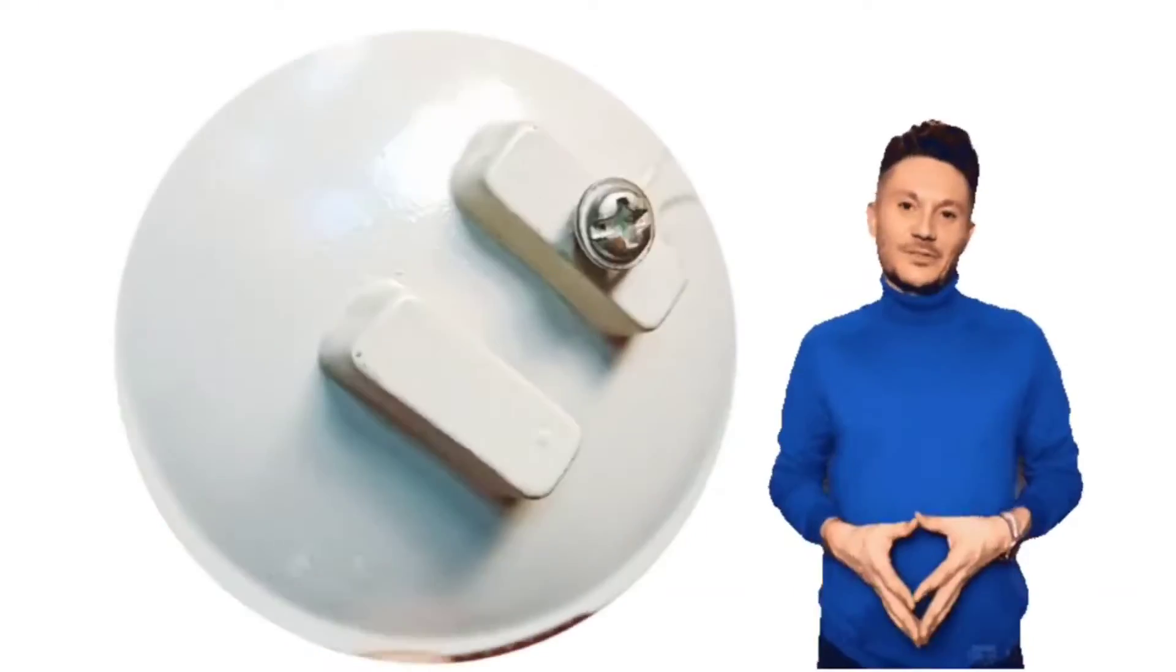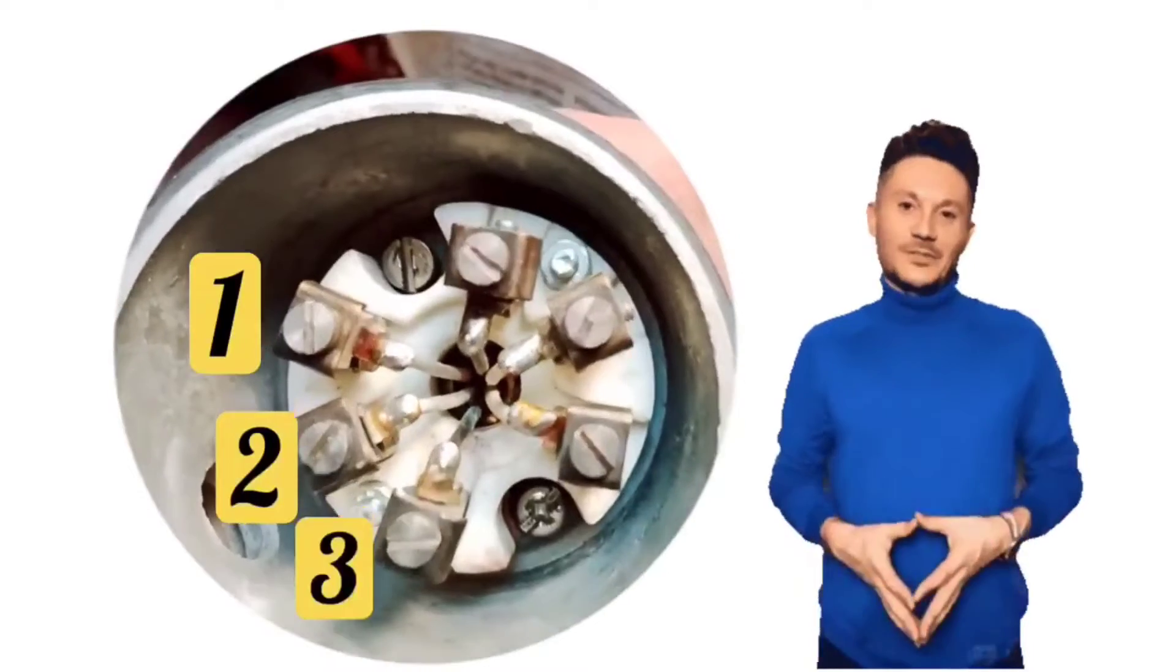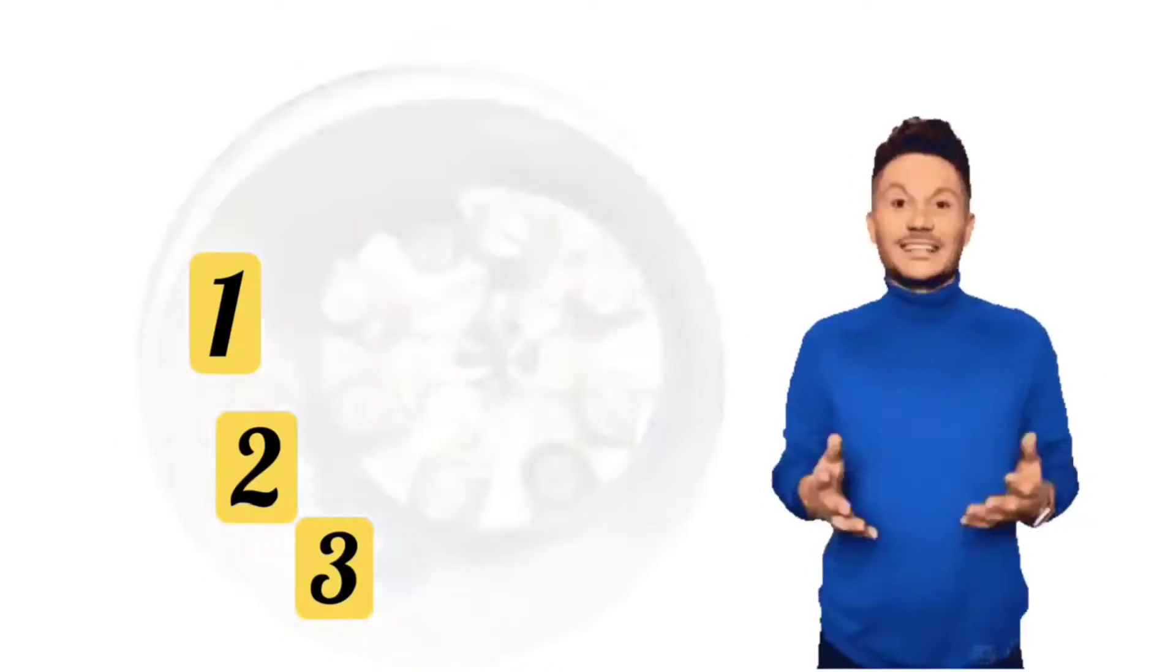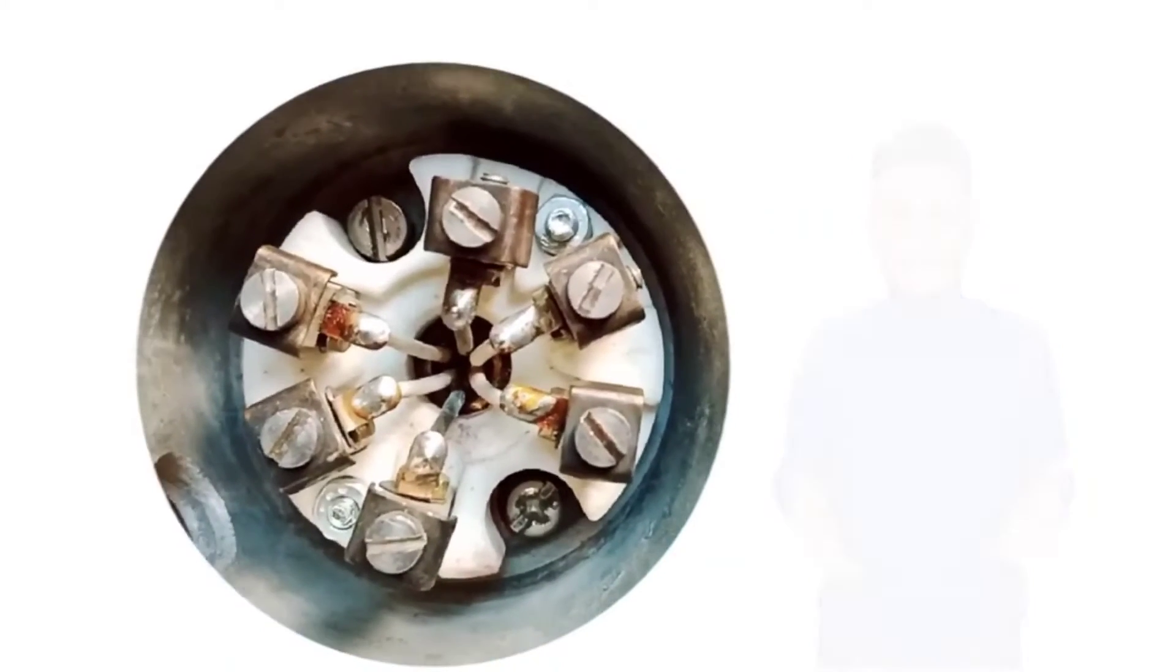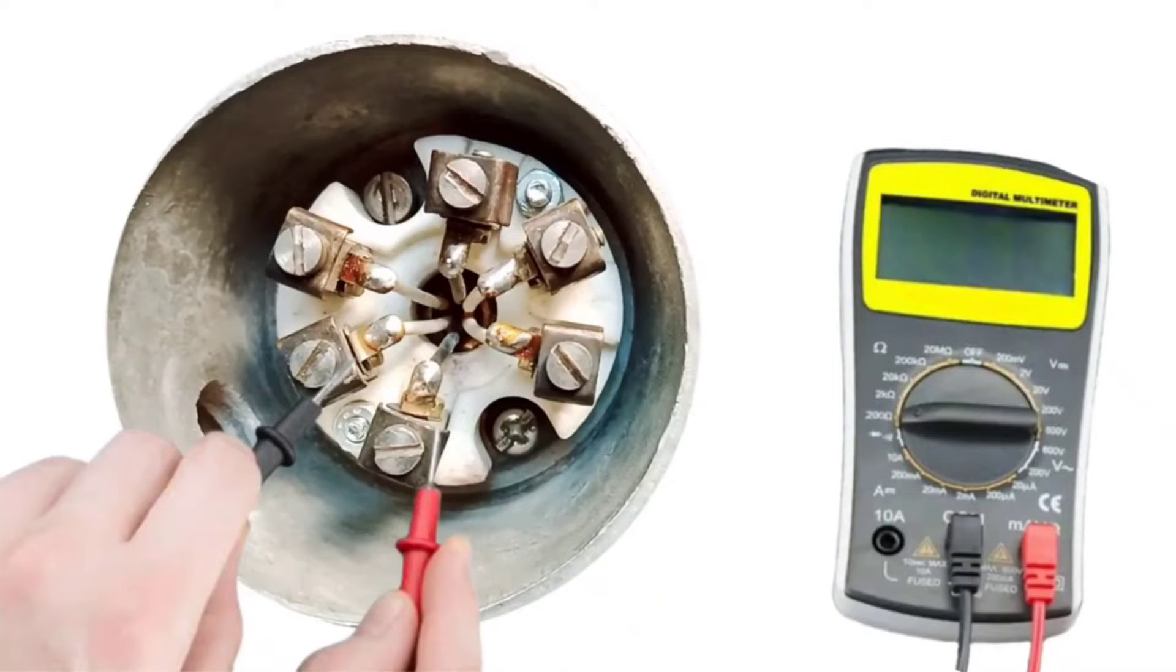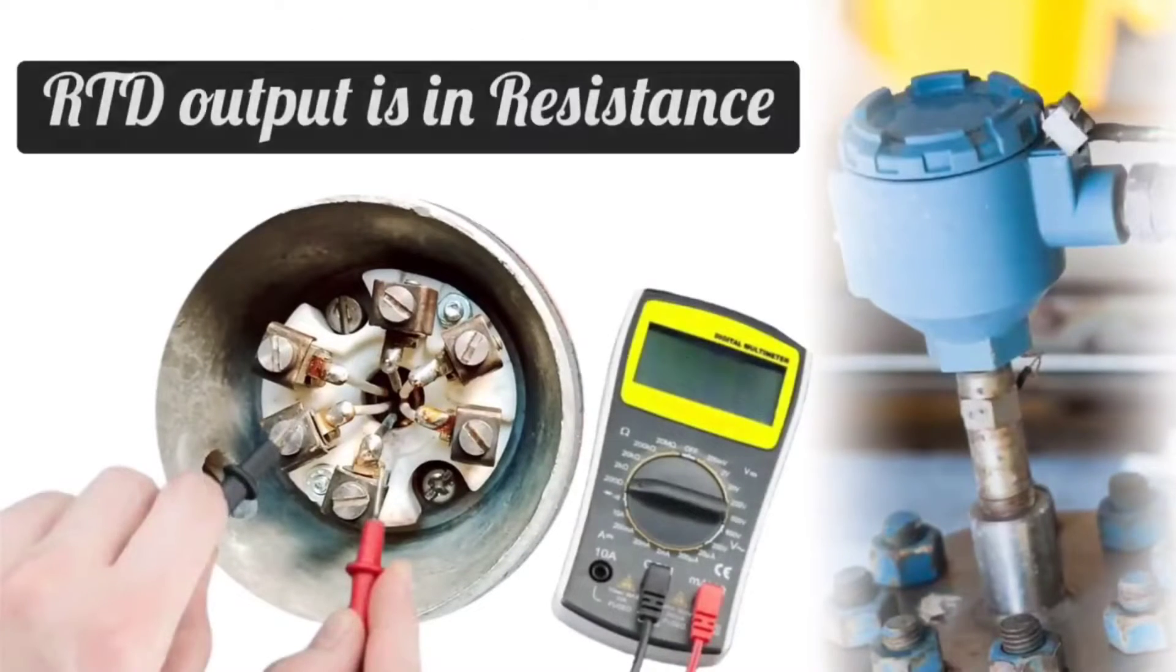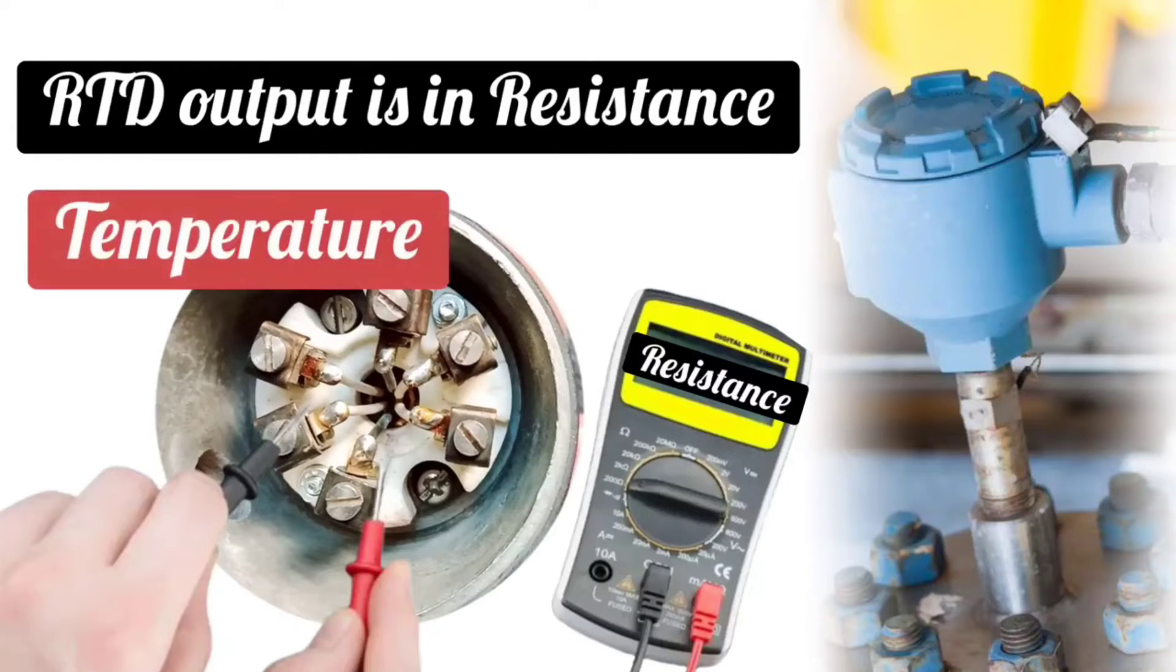When you open RTD, you will see three wires. Two wires are of the same color and one wire is of a different color. Suppose two white color wires and one black color wire is there. One probe of the multimeter is put at the white color wire and another one is put at the black color wire, and we will check the resistance. Meaning, RTD's output is resistance, and from this resistance, temperature is calculated.